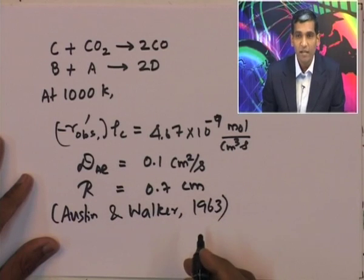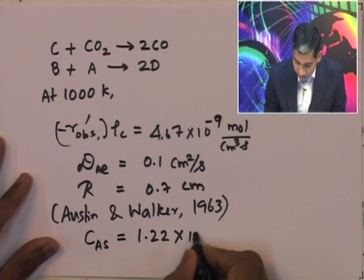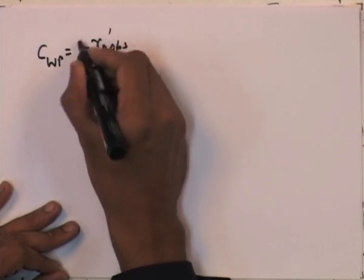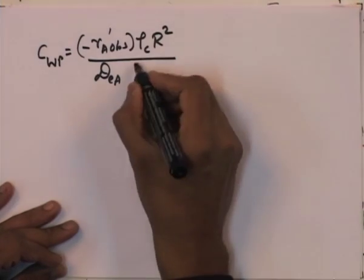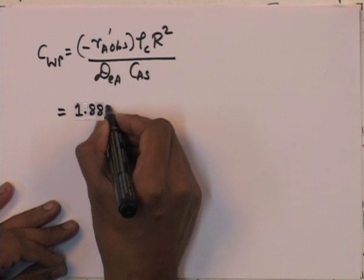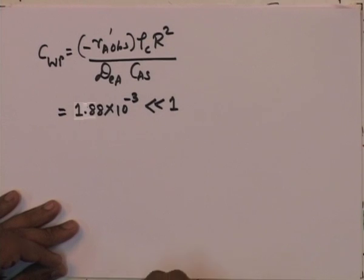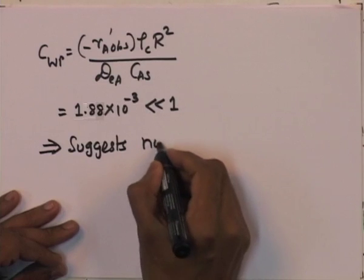At 1000 K, where the reaction is conducted, Austin and Walker in 1963 measured the rate and other parameters. The observed reaction rate multiplied by the density of the catalyst was found to be 4.67×10⁻⁹ mol/cm³·s. The effective diffusivity of species A is about 1.1 cm²/s, the radius of the particle pellet used is 0.7 cm, and the surface concentration of the species was measured to be 1.22×10⁻⁵ mol/cm³.